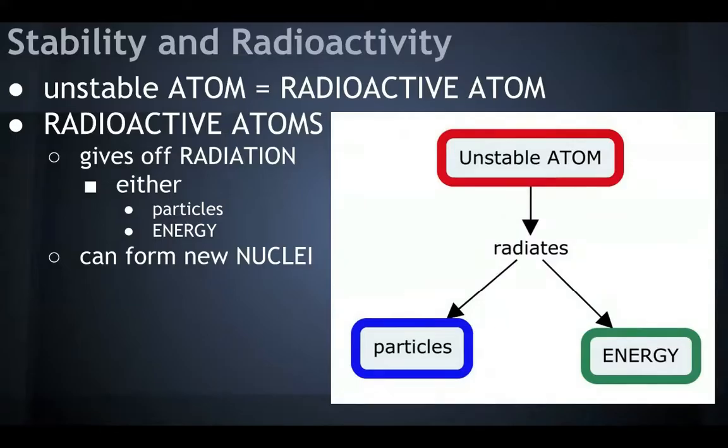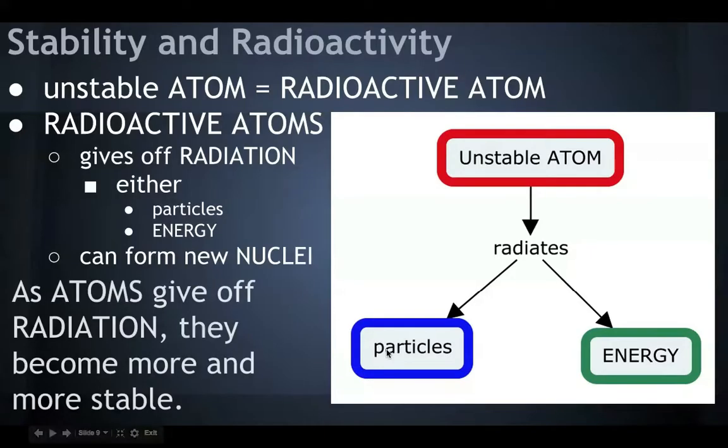And here's a little flow chart for you where it says, unstable atoms, and they radiate either particles or energy. And as they give off this radiation, either the particles or energy, they become more and more stable. So eventually, you know, atoms don't want to stay unstable. Eventually they become stable. But while they're becoming stable, they're releasing energy or particles.